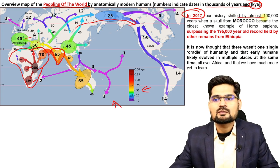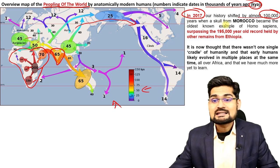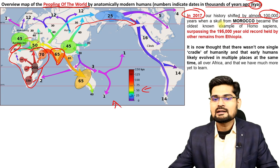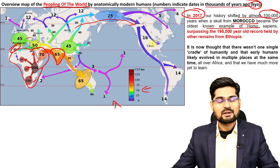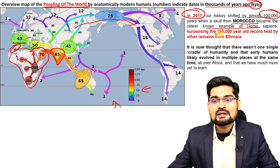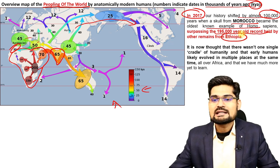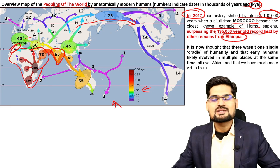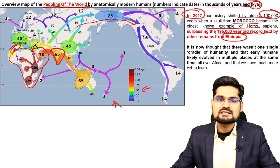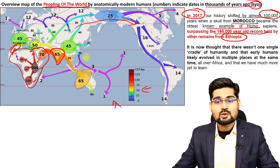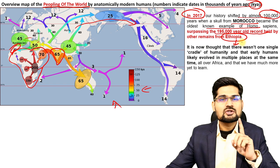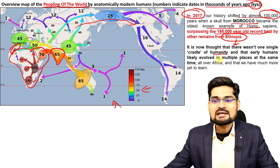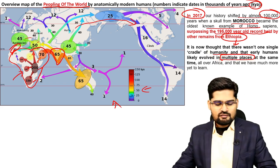Recent research from 2017 shifted our history almost one lakh years when a skull from Morocco became the oldest known example of Homo sapiens. Before that, a 195,000-year-old record found in Ethiopia was considered the origin point. Because fossils were found in Morocco as well, it now means that a single place was not the cradle of humanity — life evolved at multiple places simultaneously.